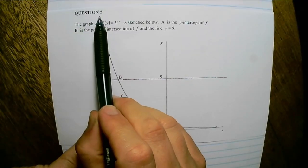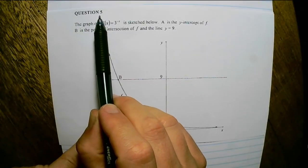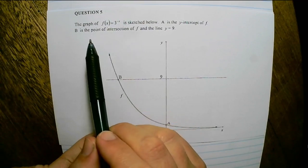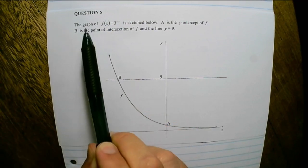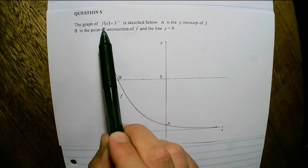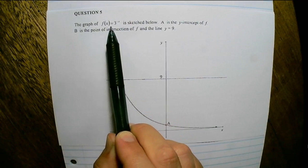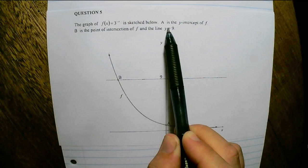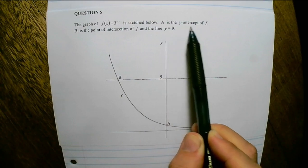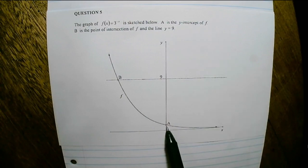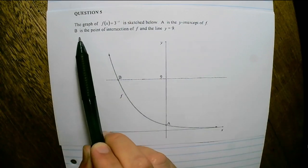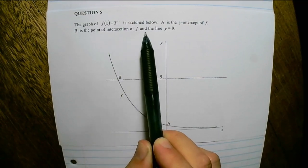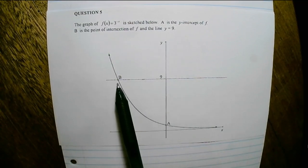We are moving on to question 5 of Paper 1, November 2020. The graph of f(x) equals 3 to the power of negative x is sketched below. A is the y-intercept of f, and B is the point of intersection of f and the line y equals 9.